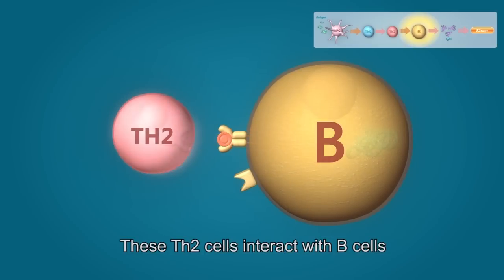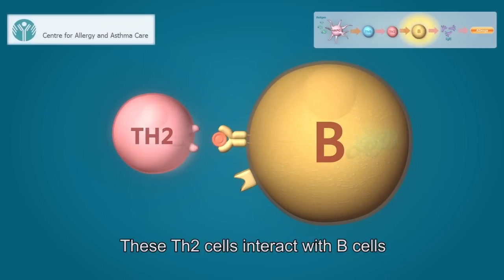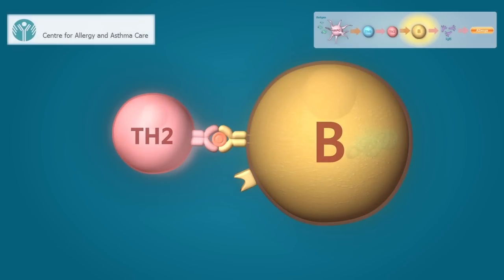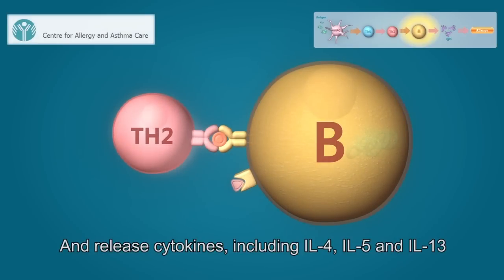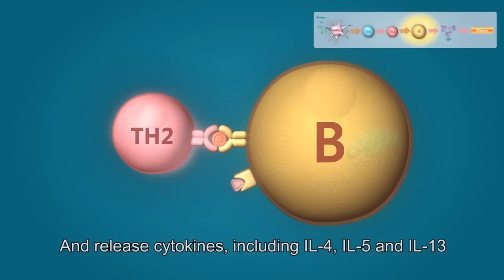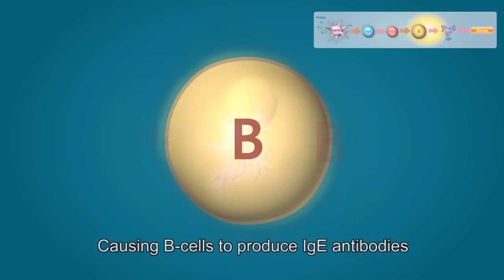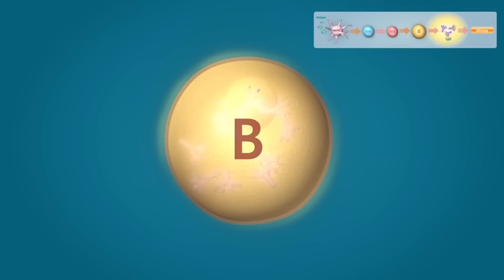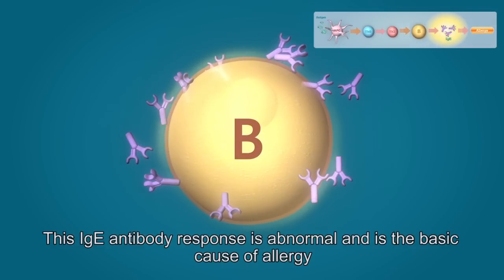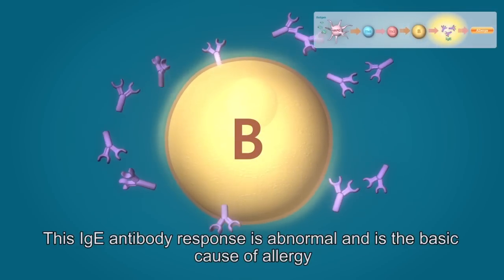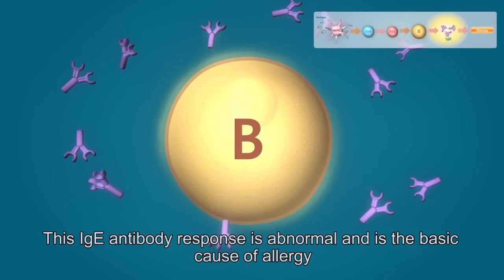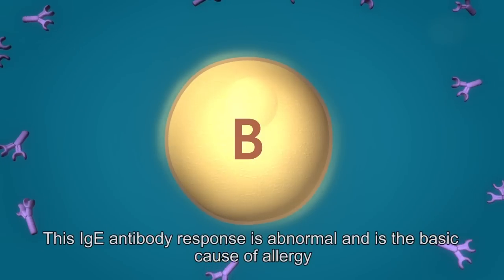These Th2 cells would interact with B cells, and release cytokines including interleukin-4, interleukin-5, and interleukin-13, causing B cells to produce IgE antibodies. This IgE antibody response is abnormal, and is the basic cause of allergy.